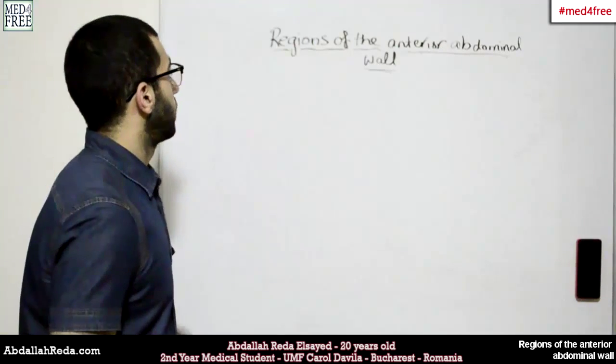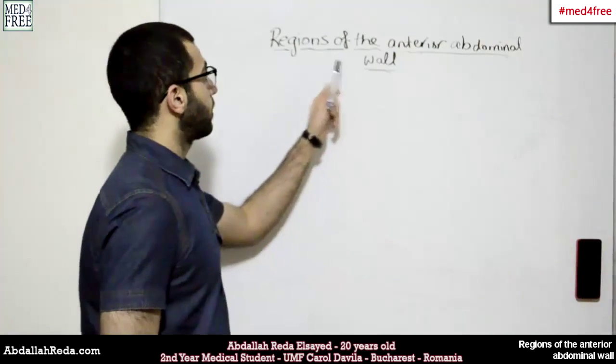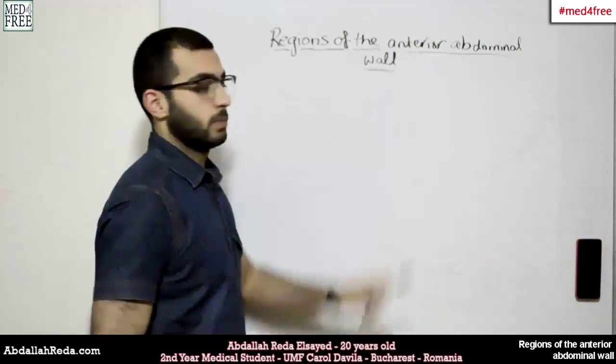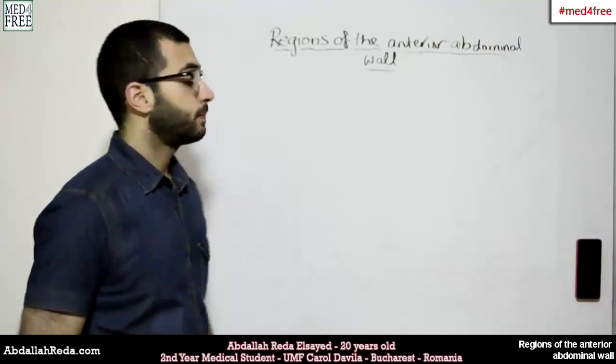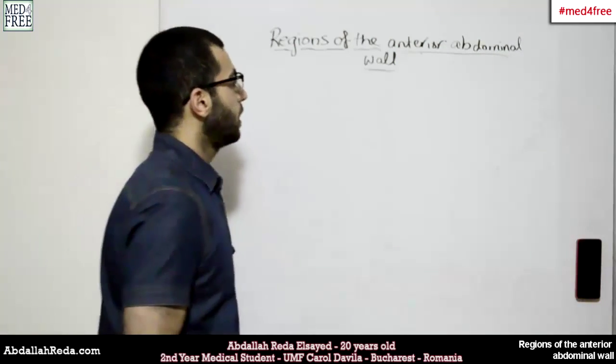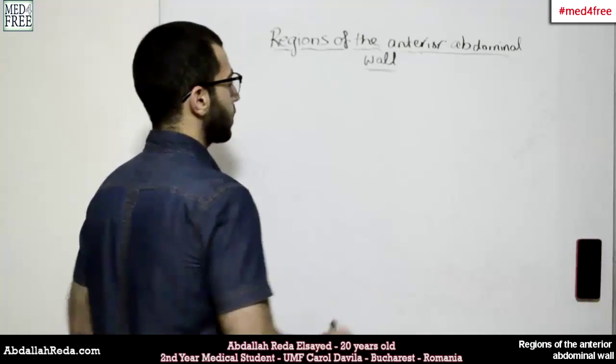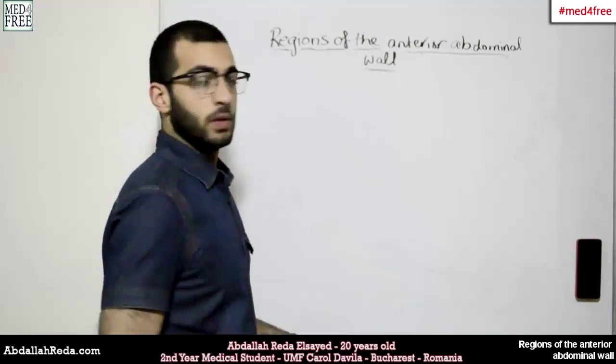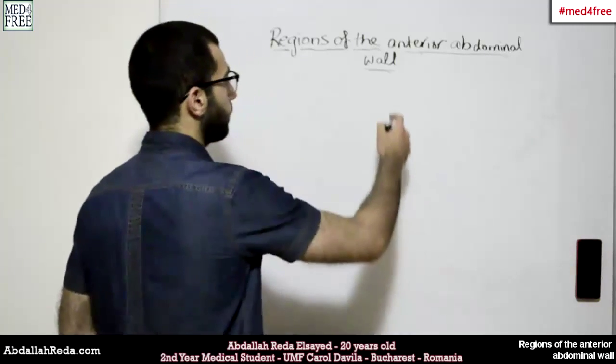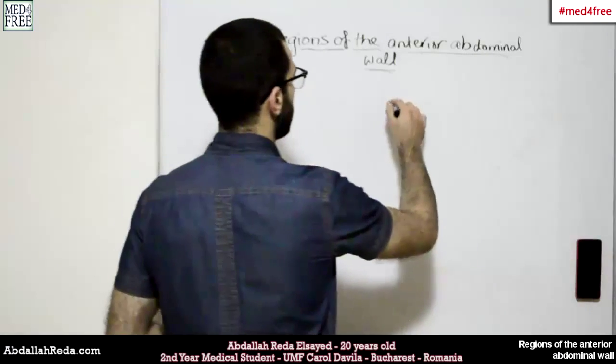This time we are going to talk about the regions of the anterior abdominal wall. First of all, we are going to draw a frontal view of the human body.